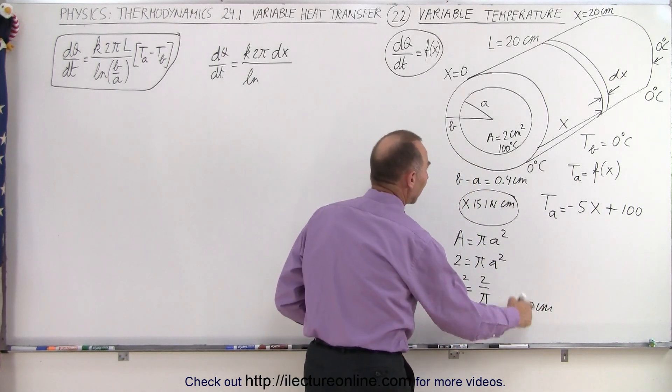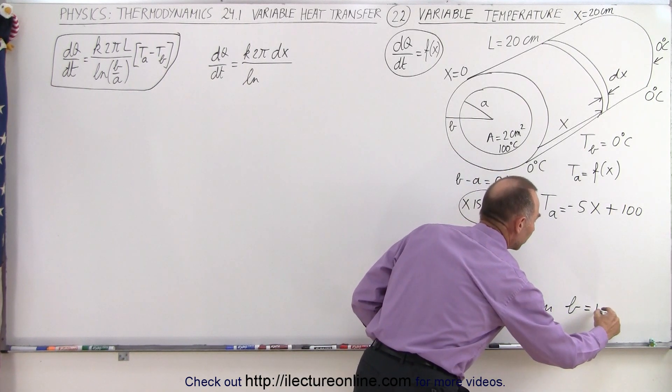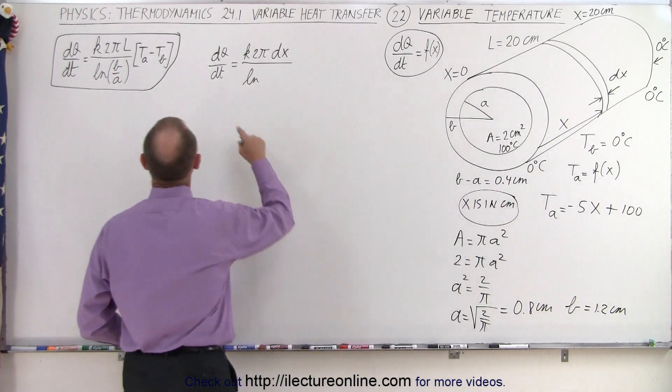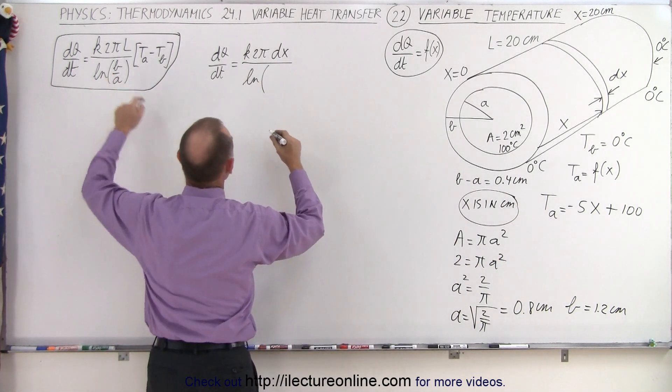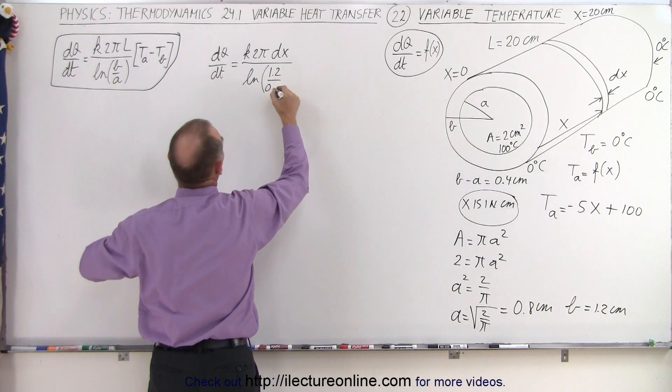So if A is equal to that, and B is 0.4 larger, then we know that B is equal to 1.2 centimeters. And so those are the two values which we're going to plug in here. So we have the natural log of B, which is 1.2, divided by A, which is 0.8.